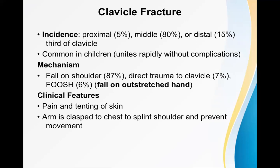We're discussing fracture of the clavicle. First, what type of bone is the clavicle? The classification includes long bone, short bone, flat bone, and irregular bone — these are the four important types. The clavicle looks like a long bone; it's an elongated type of bone which has two ends and a shaft.